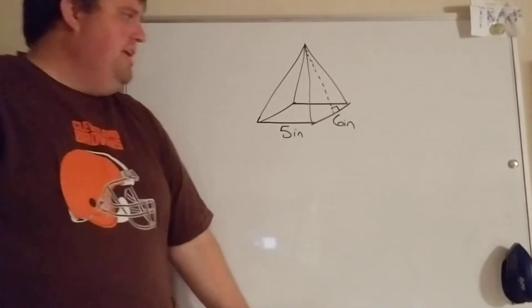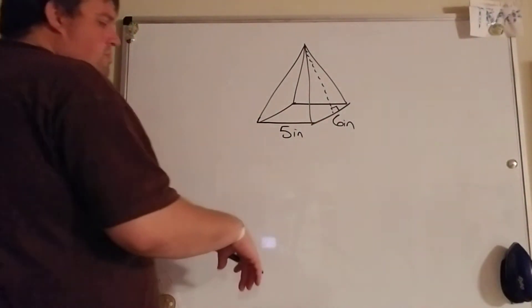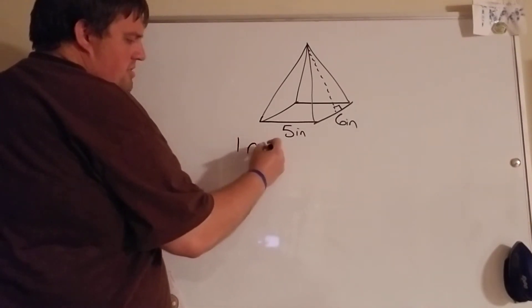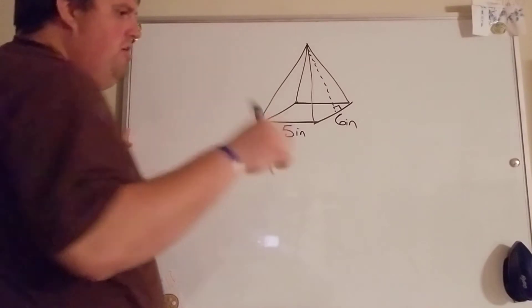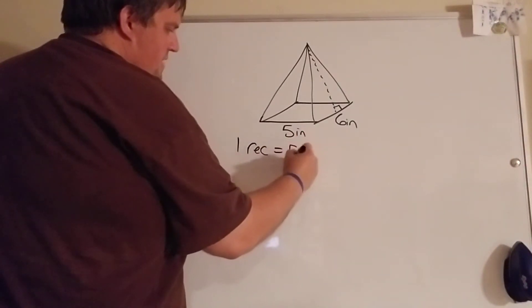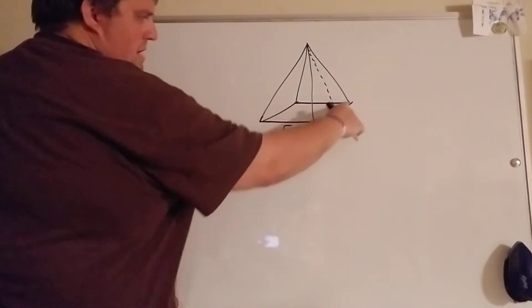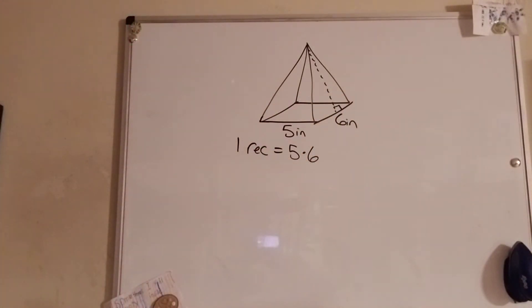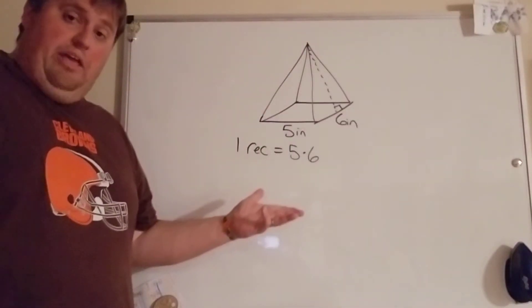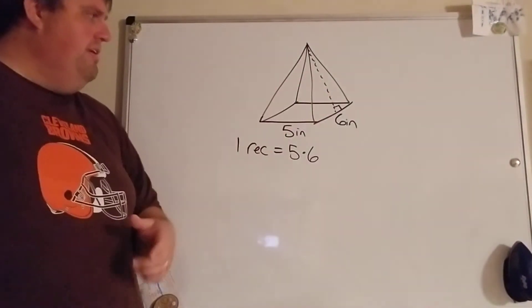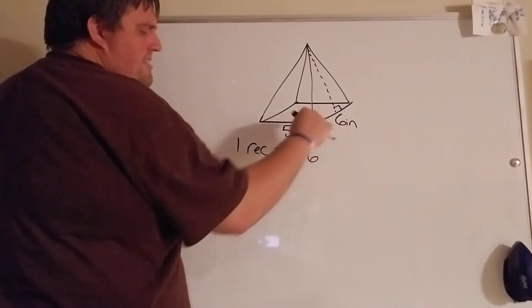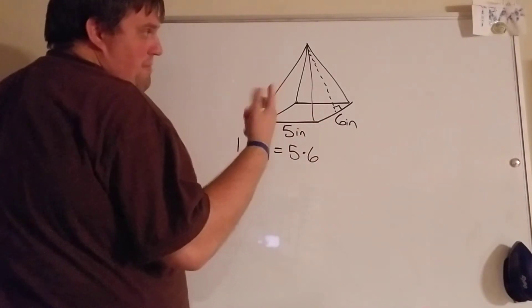So we're still breaking it into shapes. I have one rectangle that is five by six, that's this bottom one. And then the only thing that's really different here is that instead of having a lot of rectangles like we did with prisms, we're gonna have a lot of triangles because there's triangles all around the outside of this thing.